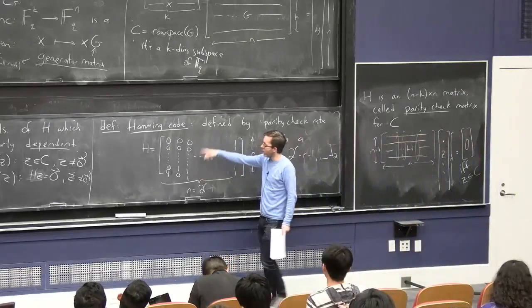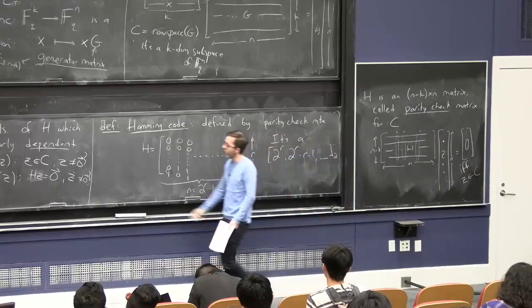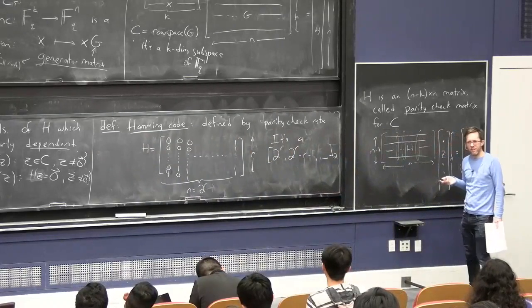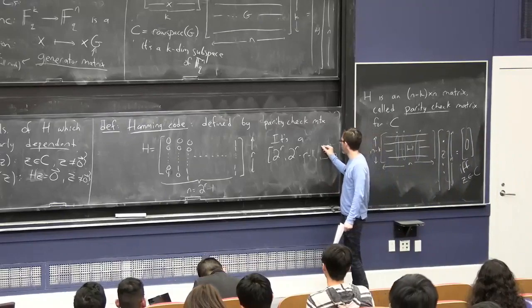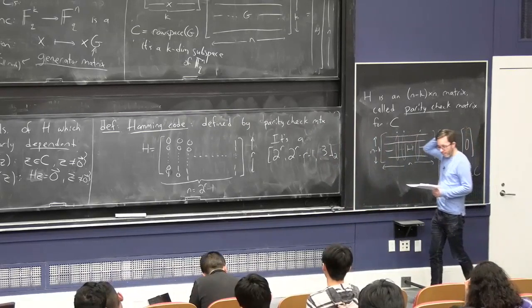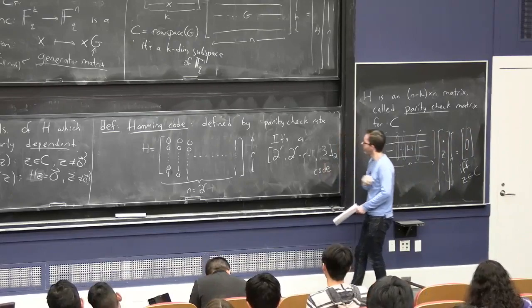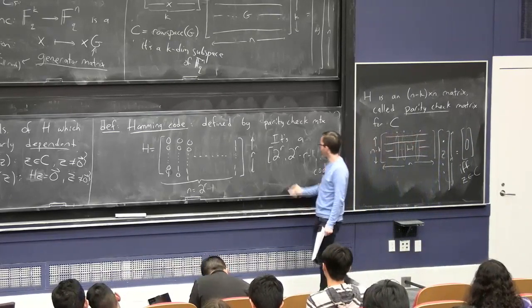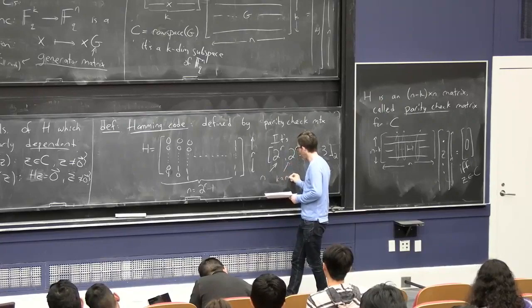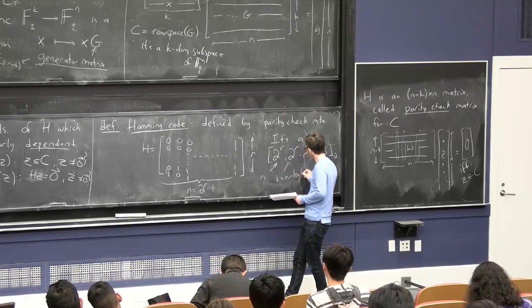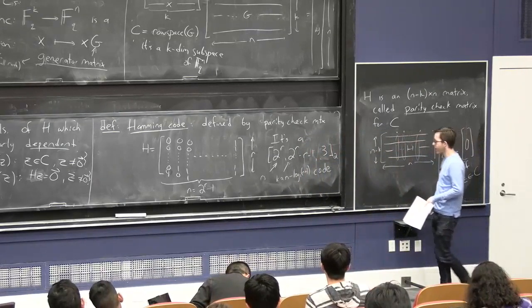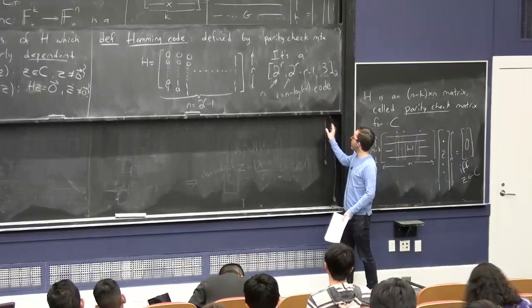So as I said before, by this characterization, since this has no all zeroes column and it has no two columns the same, the size of the smallest linear dependent set of columns is at least 3. You can actually easily see that it's exactly 3. And therefore, this distance is 3. And this K is basically n minus log n.